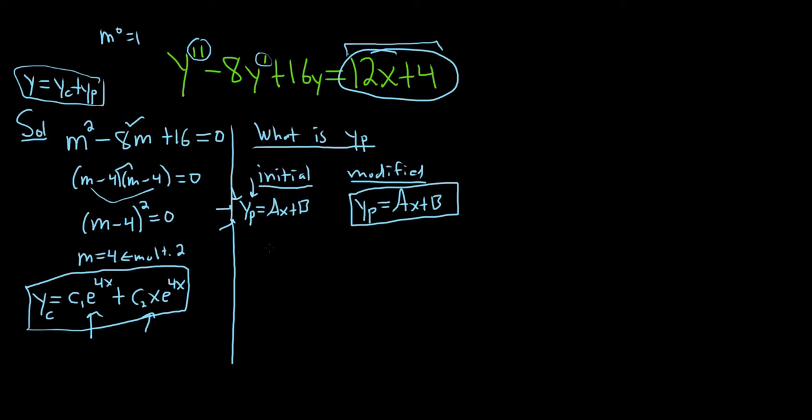The next step is to actually find yp, to find the a and the b. To do that, you take this and plug it into your DE. We have to find the derivative of y sub p. So y sub p prime, the derivative of ax plus b is just a.